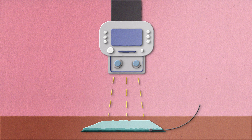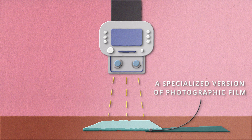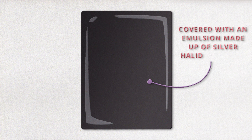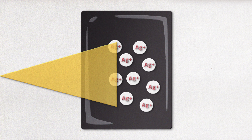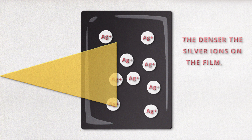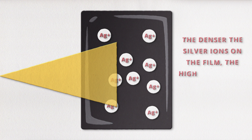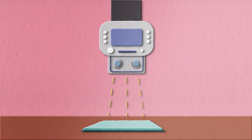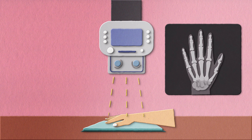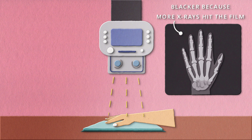This detector is essentially a specialized version of a photographic film. A film is covered with an emulsion made up of silver halide crystals. When the film is exposed to light or photons, it causes the crystals to turn into silver ions. The denser the silver ions on the film, the higher the light intensity in that area of the image. With x-rays, something similar is happening — the x-ray source will rapidly fire x-rays at your body part. The x-ray detector or film will capture these x-rays and develop the image. The more x-rays hit the film, the blacker the image will be, because your body did not absorb those x-rays.